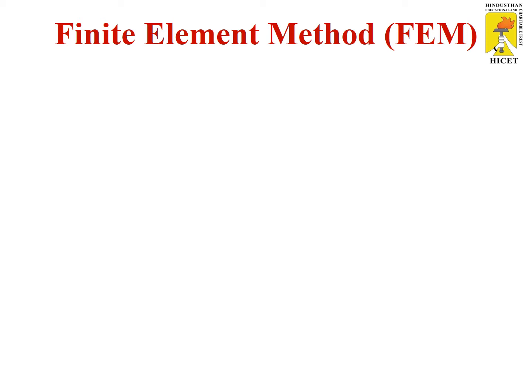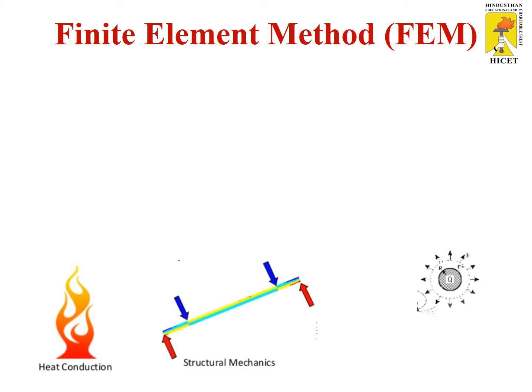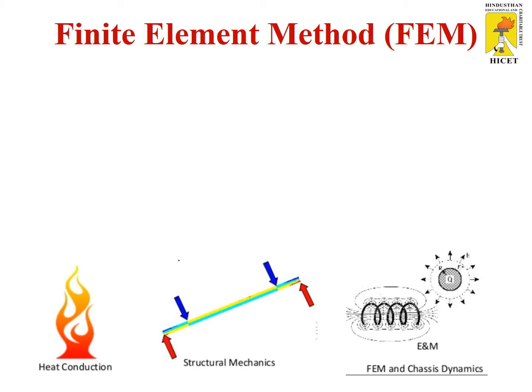FEM means the finite element method. Finite element method is the same as finite element analysis. Finite element analysis means finite elements are analyzed — small elements are analyzed. FEM and FEA are both the same things: FEA means finite element analysis, FEM means finite element method. Where we use the finite element method: in a heat conduction process, structural mechanics, and transfer of electrical energy. These are the three main fields used to analyze parts.